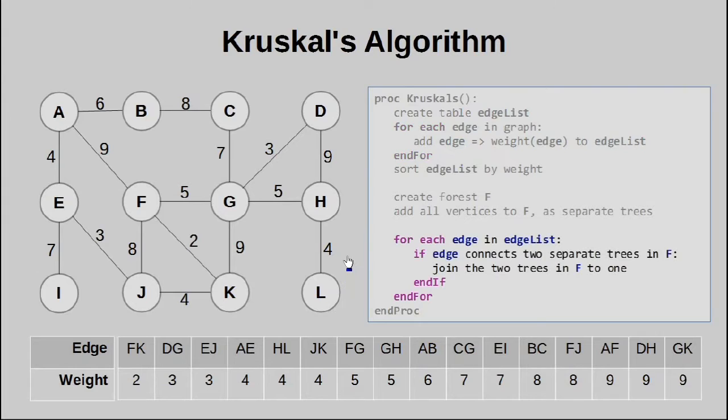Once that is done, we're actually going to go to the next step, which is not shown. Basically, we want to create a forest. A forest is a collection of trees. We want to add every vertex as a one element tree to the forest F.